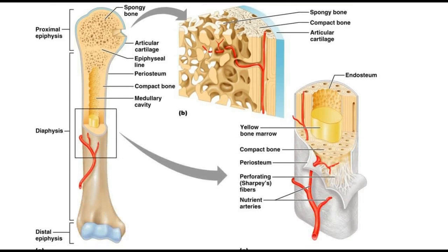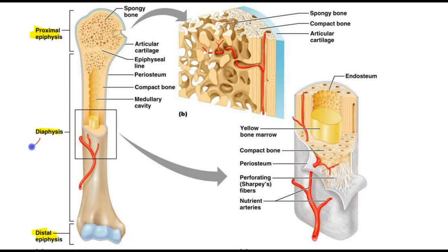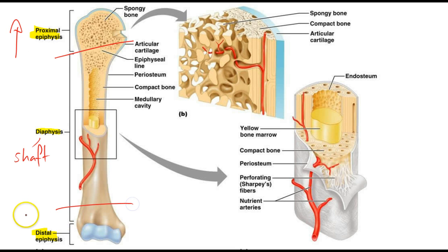If we go down and actually have a look at our long bone here, we can see the proximal epiphysis, our distal epiphysis, and our diaphysis. Essentially, the diaphysis here is the shaft of the bone, and our proximal and distal epiphysis are the flared out areas at the end of the bone.